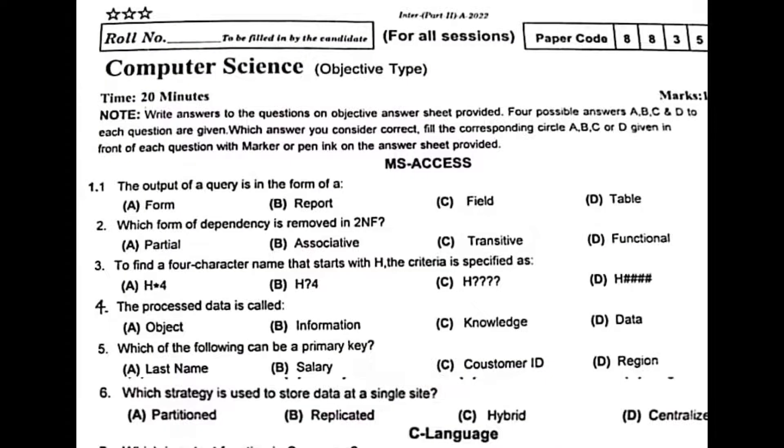The output of a query is in the form of table. Which form of dependency is removed in 2NF? To find a four-character name that starts with H, the criteria is specified as option C: H followed by three question marks.